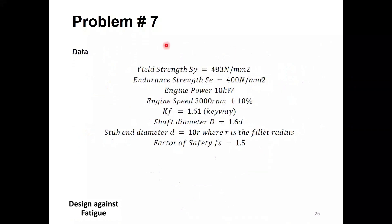Here is a summary of the given data: yield strength and endurance strength of the material are given; the power transmitted is constant at 10 kilowatts; the nominal speed is 3,000 RPM, which fluctuates by plus or minus 10%. This speed fluctuation, with constant power, will cause corresponding fluctuations in the transmitted torque.